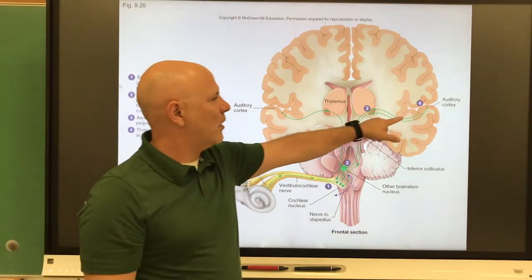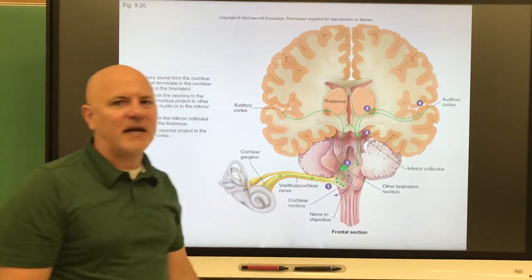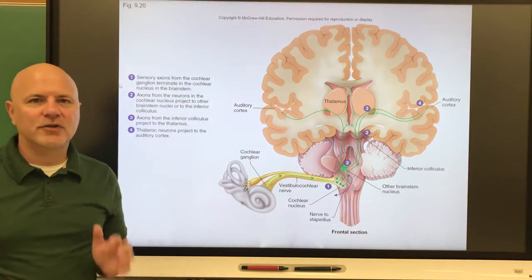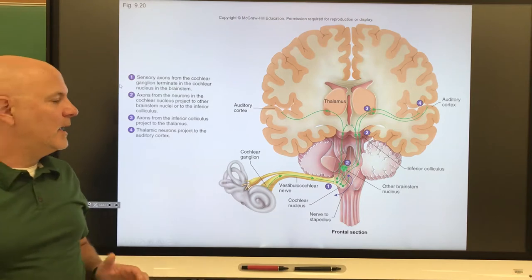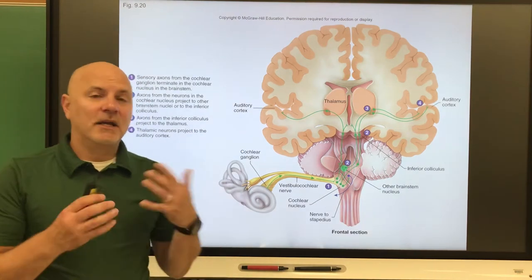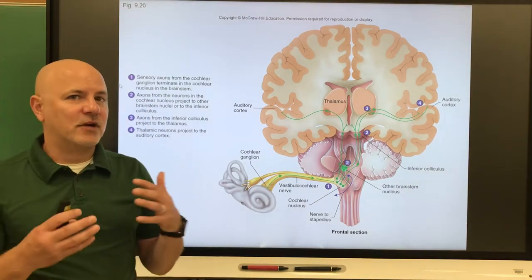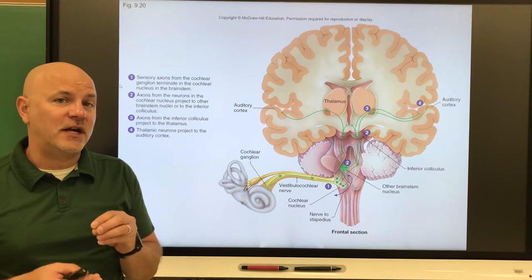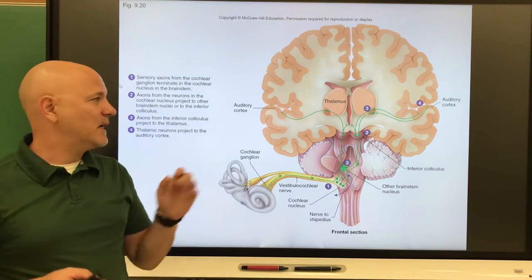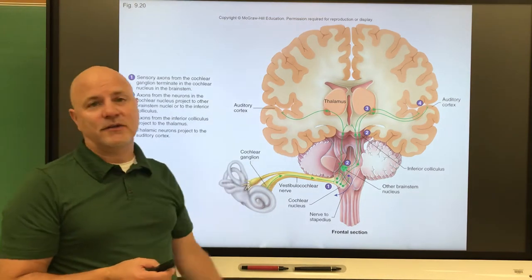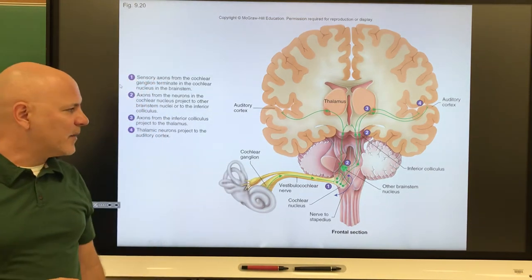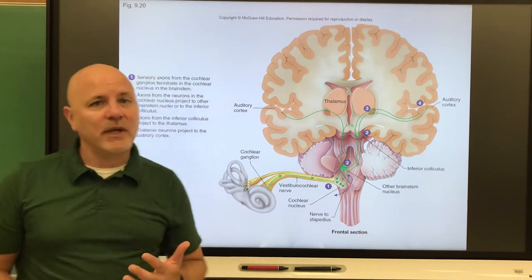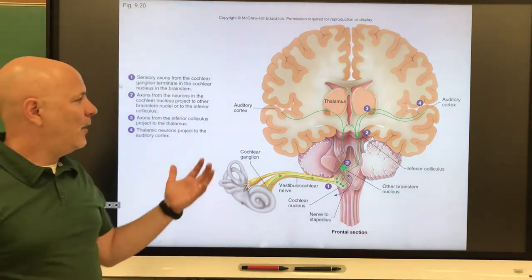That impulse goes to our auditory cortex in our temporal lobe and we interpret that sound. Different sounds are going to produce different vibrations, so different hair cells are going to be triggered and send different signals to our brain to be interpreted. That's how we hear.